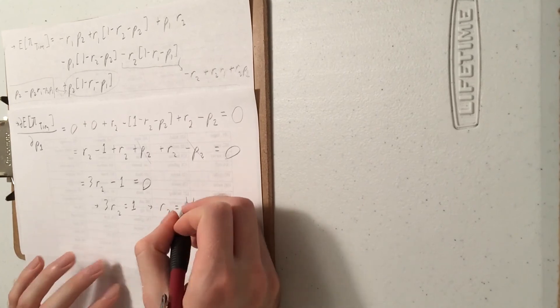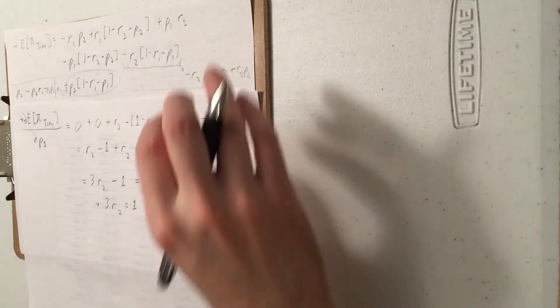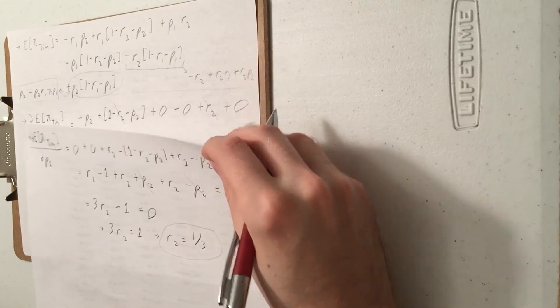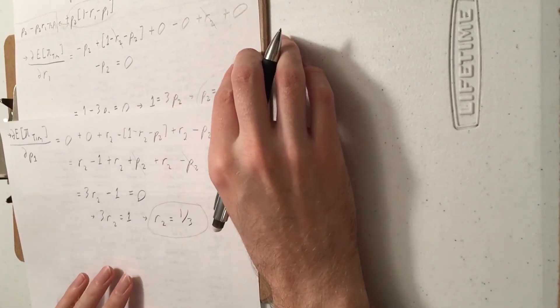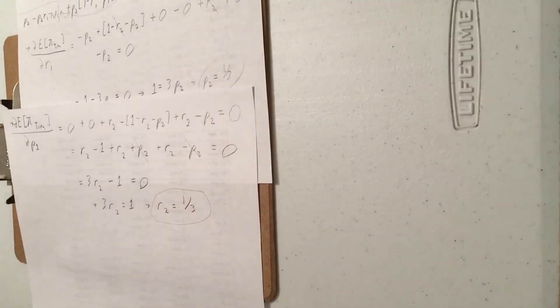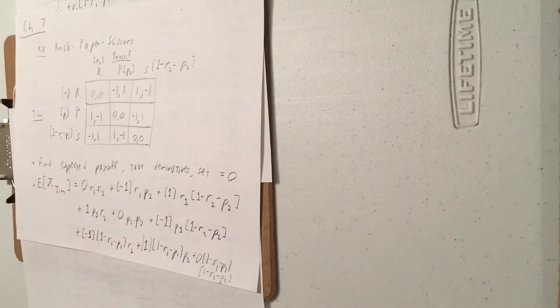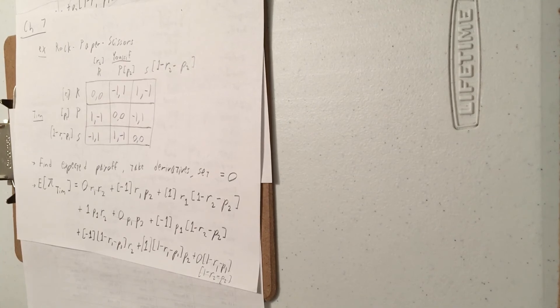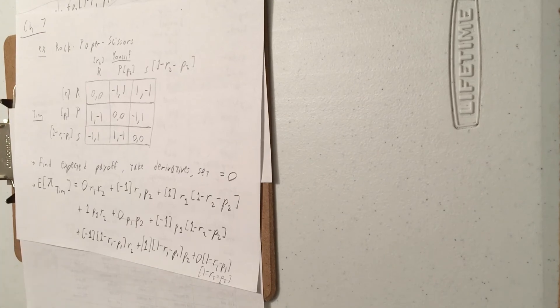R2 equals one third — you play rock one third of the time, just like you intuited as a kid. So I've solved for R2 and P2. I still need R1 and P1, but the good news is I have a shortcut: this game is symmetric. If I found how Yusuf should play the game, and it's a symmetric game, then the same is true for Timothy. So R1 is also one third and P1 is also one third — I just cut my work in half.